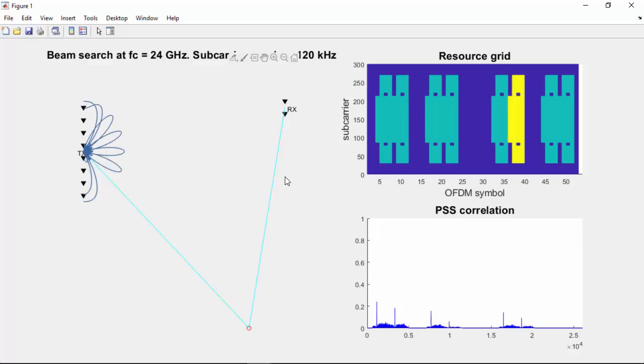Until the seventh transmission, where the main beam covers the location of the reflection. In this case, the received energy is much higher and, once all transmissions are complete, the UE can clearly identify the SSB with the most suitable beamforming.